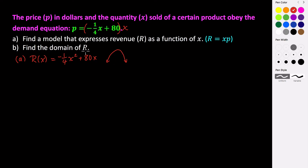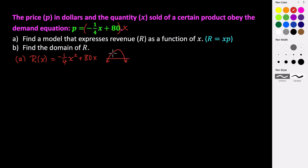The shape of this parabola is important for determining the domain. We want x values that give us positive revenue — we don't want negative revenue. We also can't sell a negative number of products, so x must be at least zero. We want to find which x values keep the graph above the x-axis, so we look for the x-intercepts.